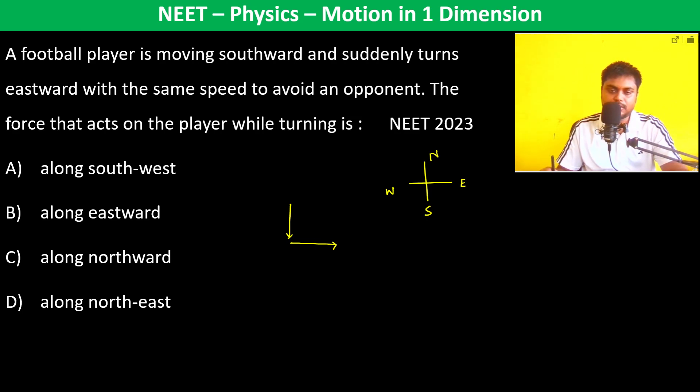We can write the initial velocity as minus j cap. The final velocity is equal to i cap. Therefore, dv, which is the change in velocity (delta v), is final velocity minus initial velocity, which equals i cap minus (minus j cap), which equals i cap plus j cap.